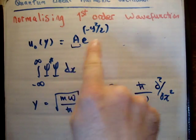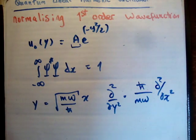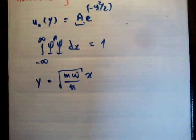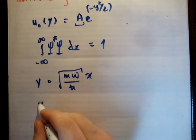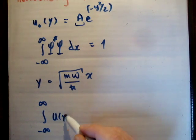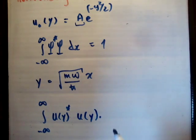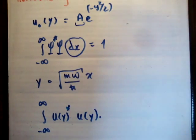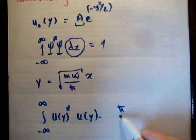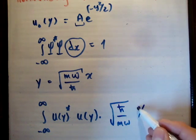So we need to somehow turn this integral into an integral in y. That's pretty straightforward. We're going to integrate from negative to positive infinity, u of y complex conjugate times u of y. And we're going to have, instead of dx, we need dy. So dx is going to be equal to the square root of h bar over m omega times dy.